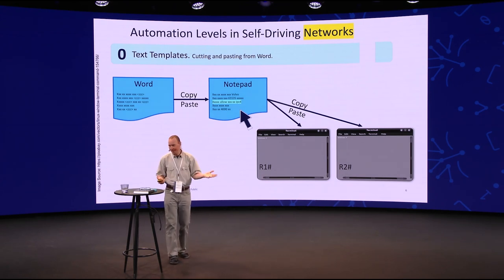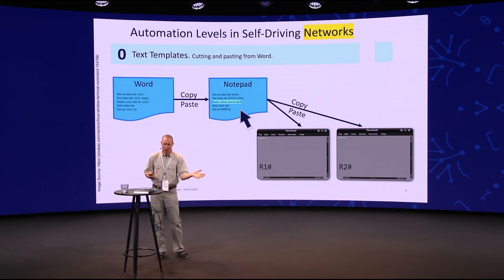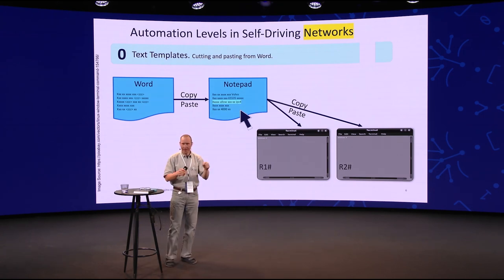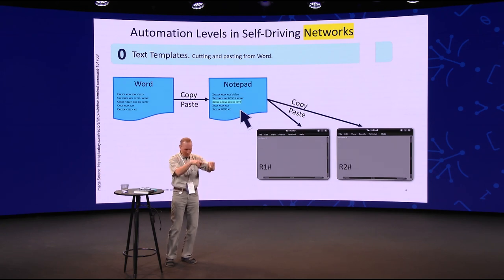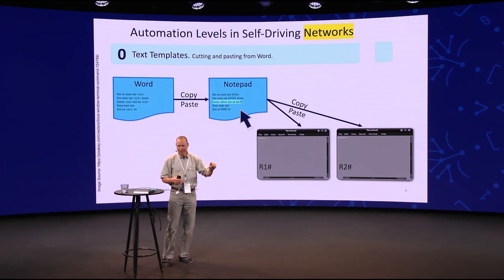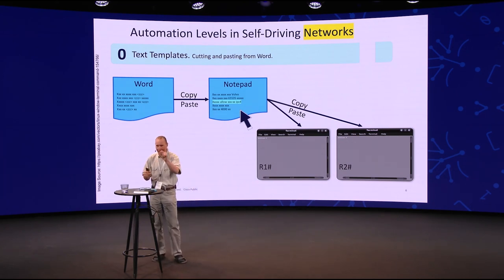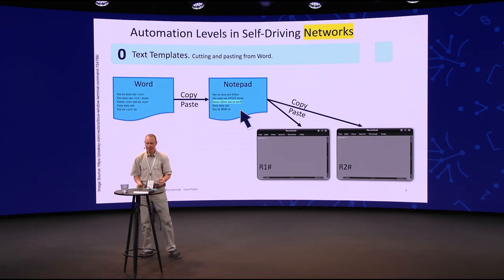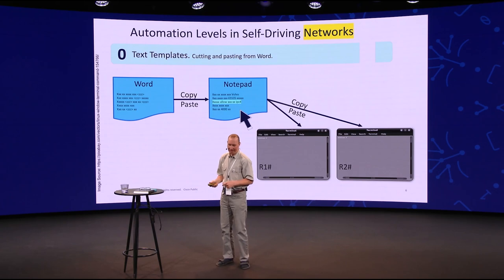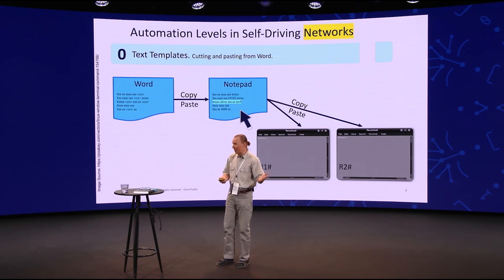Level zero is not really automated, but it's at least an embryo. You have your maps in a Word document somewhere — page 58 or 558, depending on how old your organization is. In there, there are snippets of commands that you're supposed to copy and paste into your terminals for the routers. There's usually a middle step: you take the Word document into Notepad, replace a few things like a customer name or a number, and then paste it into the right window. That's what I call level zero.